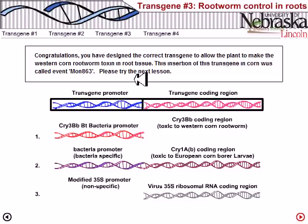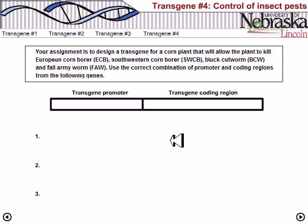The fourth assignment: design a transgene for a corn plant that will allow the plant to kill European corn borer (ECB), southwestern corn borer (SWCB), black cutworm (BCW), and fall armyworm (FAW). We need multiple resistance activity against these pests.